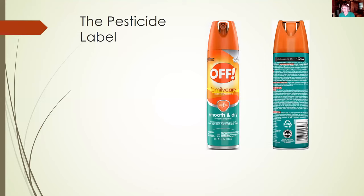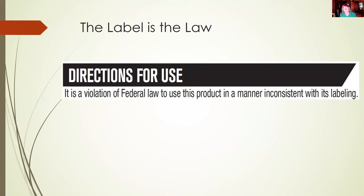This is the information printed on or attached to the container when you buy the product. It has all the information you need to use the product correctly and effectively to control a pest while protecting people and the environment. And you'll notice in the directions for use, it says the label is the law. What does that mean? It means you can only use it as described on the label. If it's for outdoor use only, you can't use it indoors. If it says to use one ounce per thousand square feet, you can't use two ounces. You have to follow the labels for your own protection.